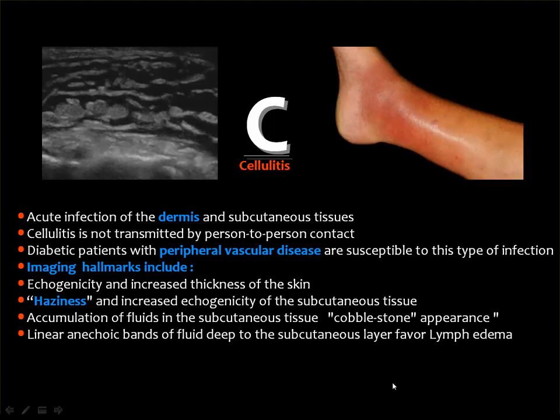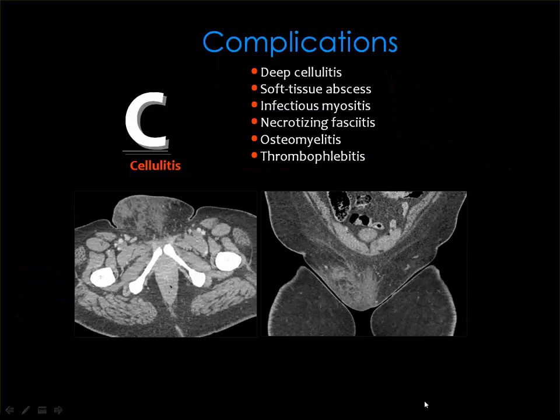The diagnosis of cellulitis is easy from the clinical point of view, but sometimes you may need to look for possible complications. One of the best imaging modalities here is ultrasound — it is rapid and dynamic. On ultrasound, you may see echogenicity of the skin, haziness of the subcutaneous tissues with edema giving the cobblestone appearance, and also hypoechoic or anechoic bands of fluid in the subcutaneous tissues.